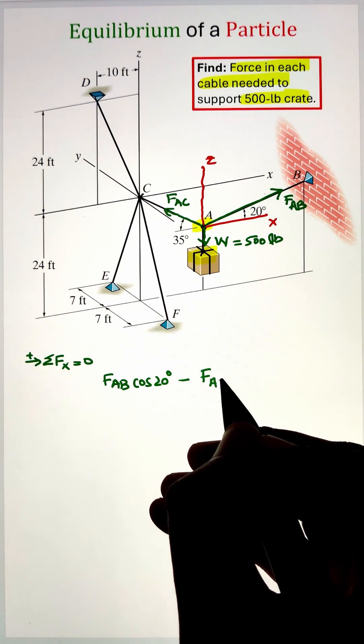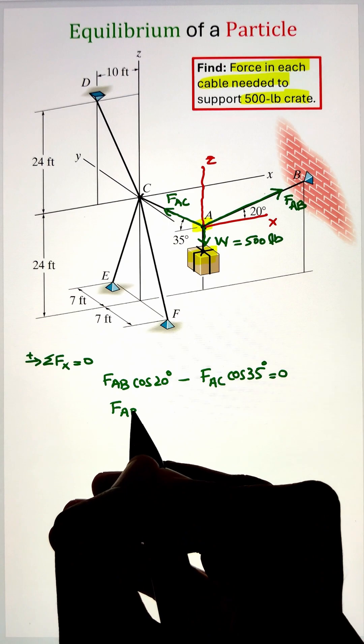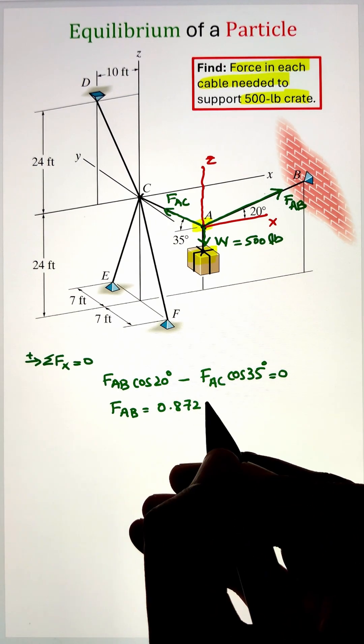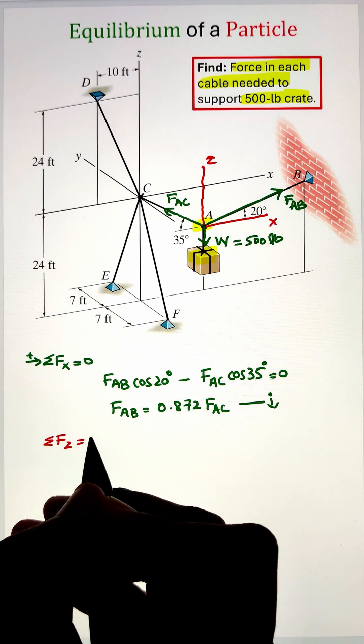Once we have all the forces listed, let's go ahead and apply the equilibrium condition by adding all the forces along the x-axis. Here, only two components of the force FAC and FAB act along the positive and negative direction, so we can figure out a relationship of FAB in terms of FAC.